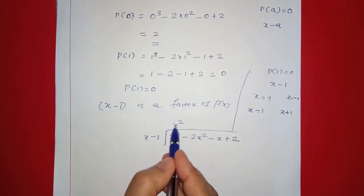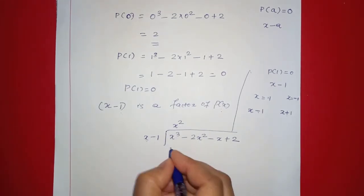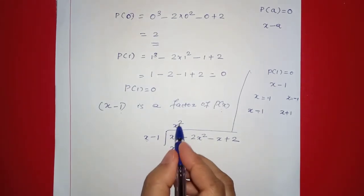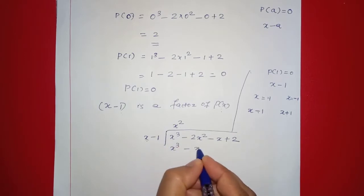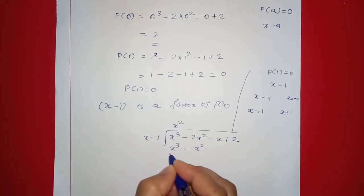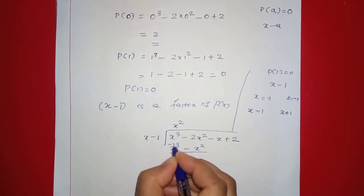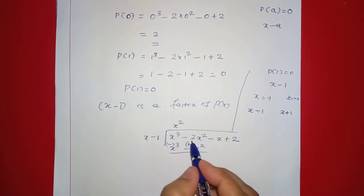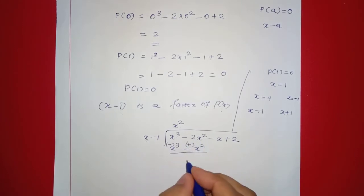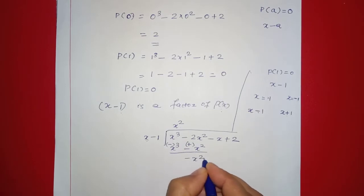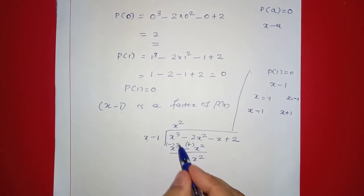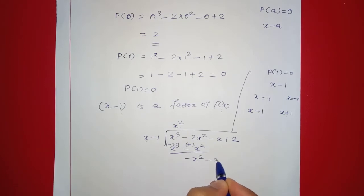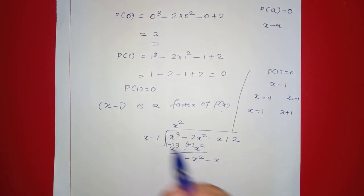We divide the polynomial: x raised to 3 divided by x gives x squared. Then x squared times x minus 1 gives x raised to 3 minus x squared. Sign change: minus 2x squared plus x squared gives minus x squared.